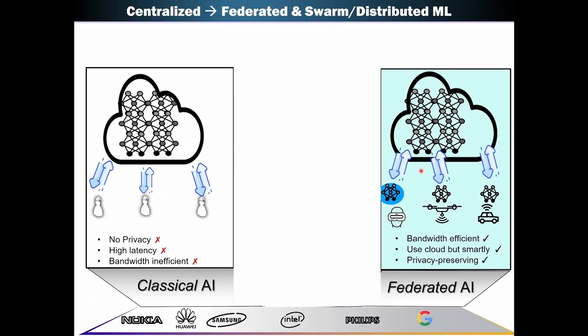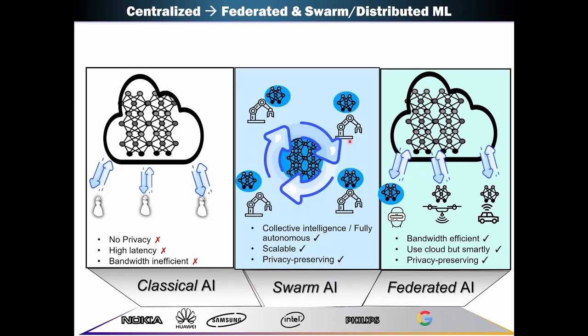You still use the cloud, but for a different purpose compared to centralized learning. Now you can also get rid of the server where you could do the same training task collaboratively among say collaborative robots in your factory, where you inherit the scalability of this approach, but also the fact that you're training the model in a totally privacy preserving manner.